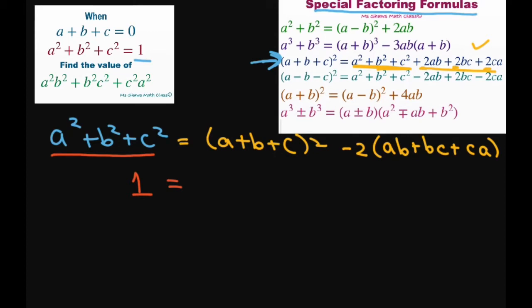We know that a plus b plus c is zero, so zero squared is just zero. And then we have minus two times ab plus bc plus ca. So I'm going to get rid of this zero here. Divide both sides by negative two, you get negative one half equals ab plus bc plus ca.